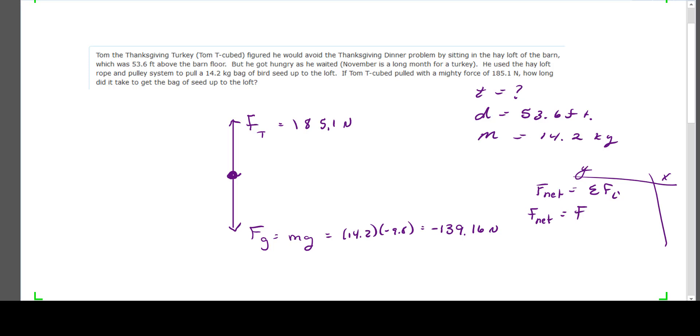F net is equal to the force of tension plus the force of gravity, which are the two individual forces in this case. We can plug in our numbers to find the total force net. So force net equals 185.1 minus 139.16. Our total net force is 45.94 newtons. We can now use that net force to find the acceleration. Acceleration is equal to F net divided by the mass. Plug in our numbers, and we get the acceleration equal to 3.235 meters per second squared.